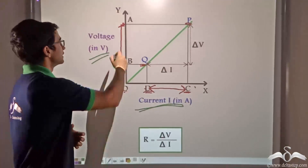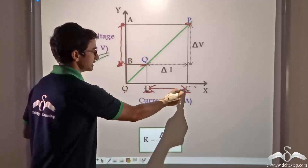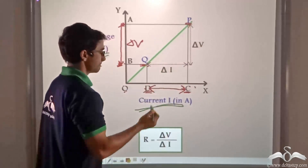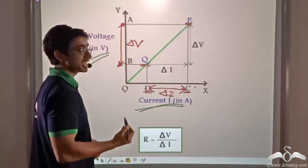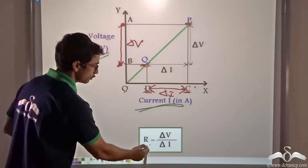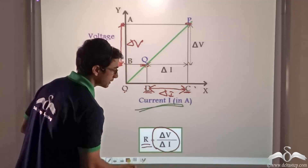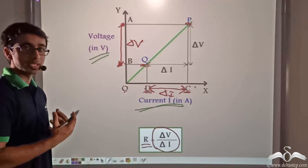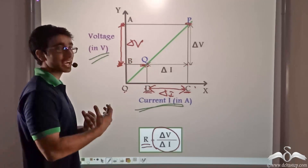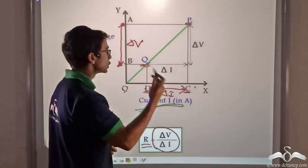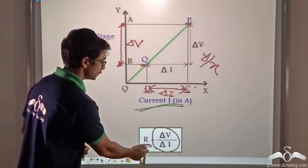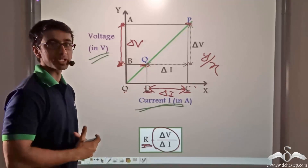If we divide delta V — the change in voltage from Q to P — by delta I, the change in current from Q to P, we get the value of resistance. That is, R equals delta V divided by delta I. We have studied that resistance is the slope of the graph, and here we are calculating exactly that — slope equals Y divided by X. So we obtain the value of resistance from the graph of an ohmic material.